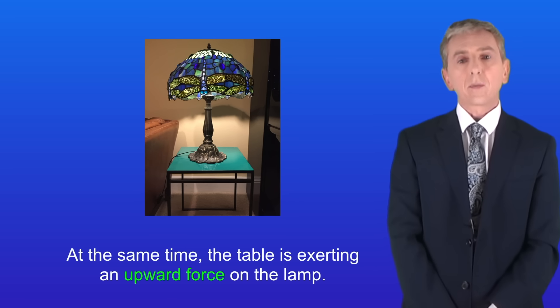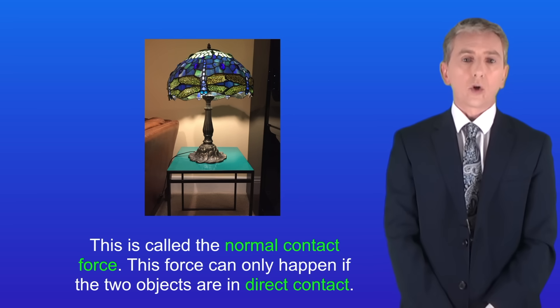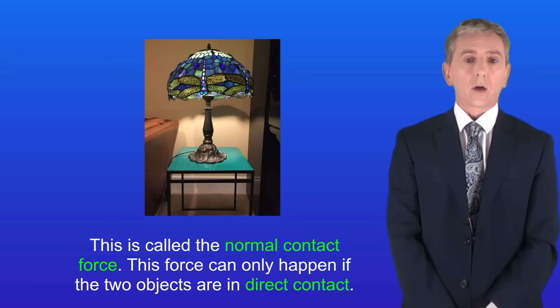At the same time the table is exerting an upward force on the lamp. This is called the normal contact force, and this force can only happen if the two objects are in direct contact. Don't worry too much about normal contact force, we'll be seeing it again in a later video.